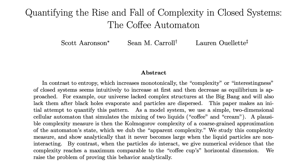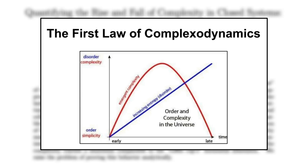The next item in the reading list is the paper version of Complexodynamics, a topic covered in the previous part of the series. It basically states that in contrast to entropy, which increases monotonically, the complexity of closed systems seems to increase at first and then decrease as equilibrium is approached. The authors studied this phenomenon by simulating the mixing of two liquids using a cellular automaton. Definitely read this paper if you want to dive deeper into this topic.